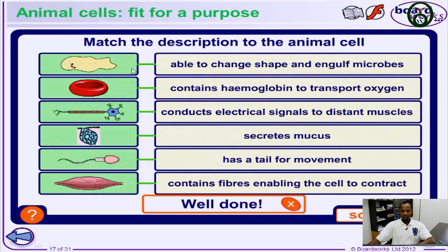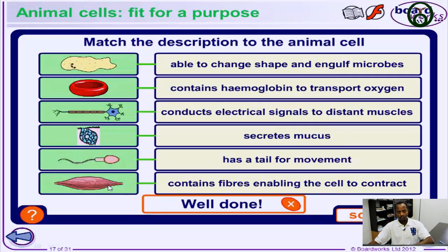This is the different cells in the body and the functions they carry out — these cells are called specialized cells. White blood cells fight pathogens; red blood cells have a concave disc shape, contain hemoglobin which binds with oxygen and moves around the body; neurons conduct electrical impulses carrying messages to the brain and spinal cord or back from them; goblet cells secrete mucus; sperm cells use their tail to swim and fertilize egg cells; and muscle cells contain fibers which enable cells to contract.